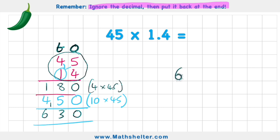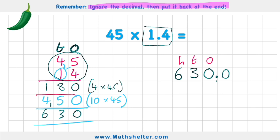But remember, 630 is 10 times bigger than what we wanted our answer to be, because we now have this decimal. At the moment my decimal place would be here — I can say 630.0. But to make it ten times smaller I'm going to move all of my digits one place to the right. To help me do that I'm going to put my column titles: ones, tens, hundreds, my decimal, and my tenths.